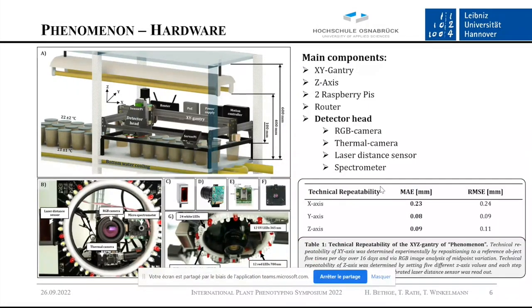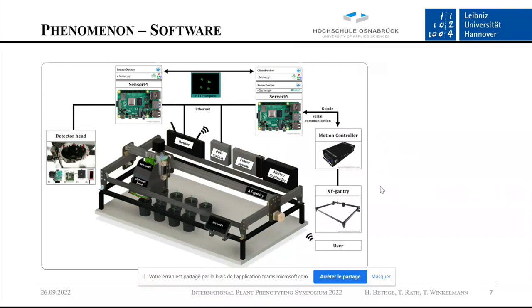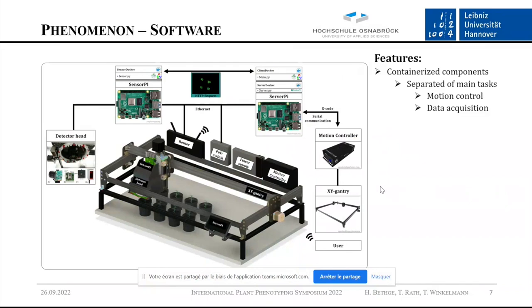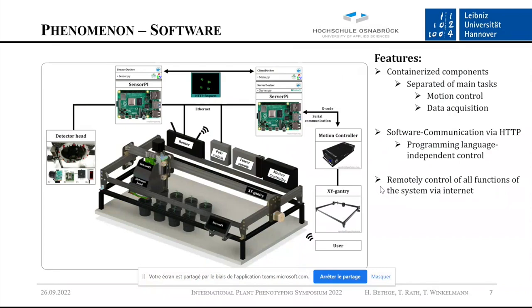We also did research on the accuracy of the repositioning of the gantry, and we achieved an average of 0.1 millimeter mean absolute error for repositioning. Here you see the software of the whole system. We have two Raspberry Pis running Docker containers, and the communication happens only via HTTP. We have a separation of the two main tasks: motion control and data acquisition. The HTTP communication provides the benefit of programming-language-independent control of all functions, with remote access via the internet. The code is already available on GitHub.